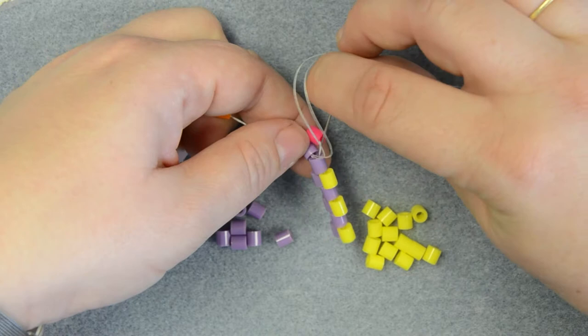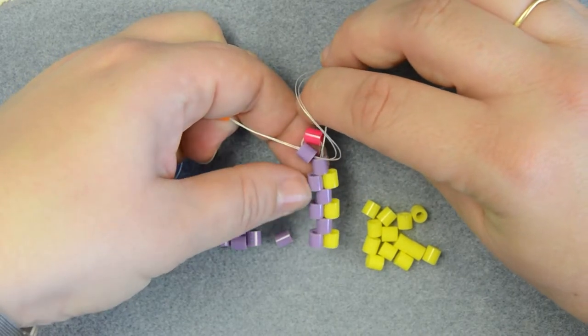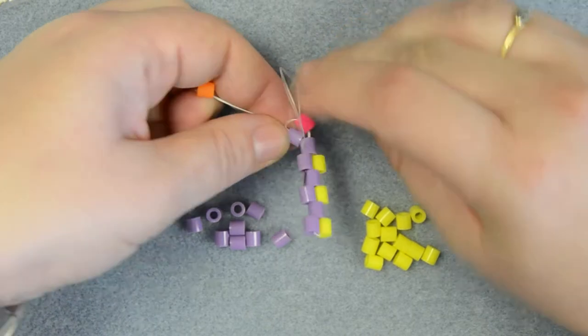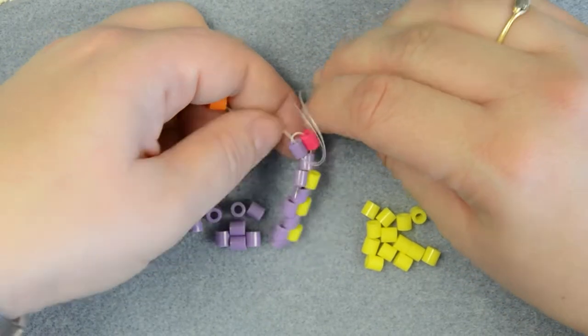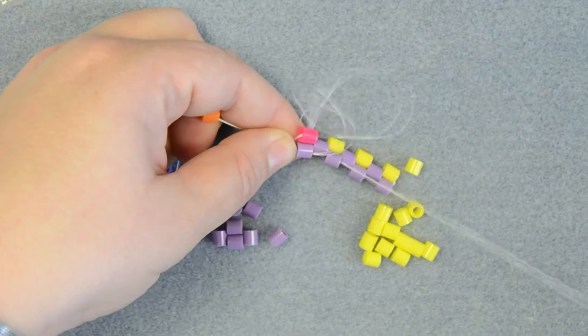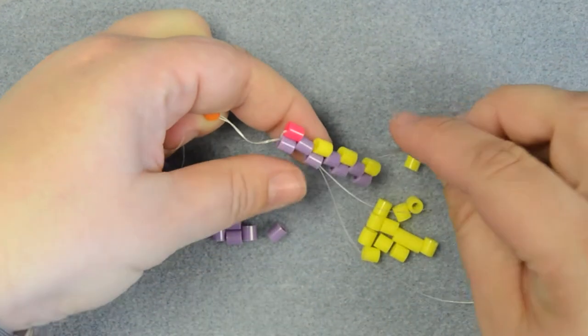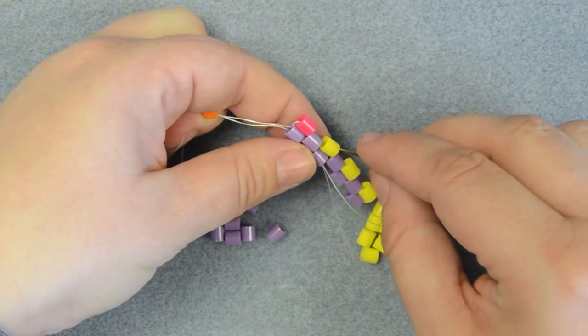So what we're going to do is we're going to come back through the purple bead here, the single one, and then the next one along on the row below, like that, and then we're going to go through the yellow bead, the purple bead.